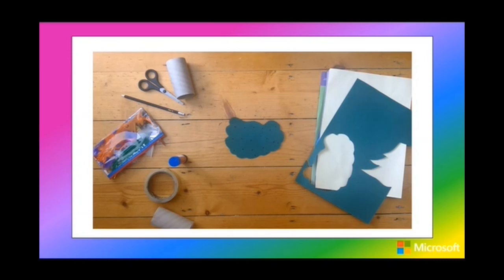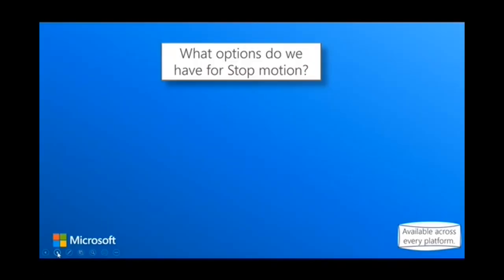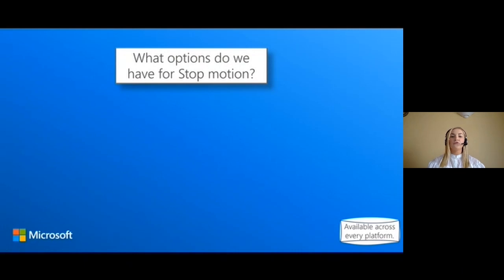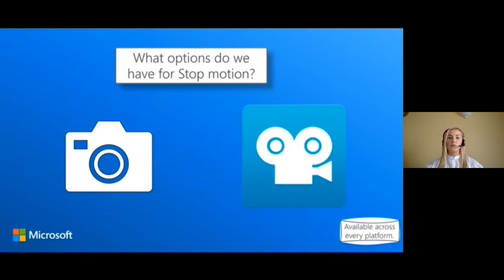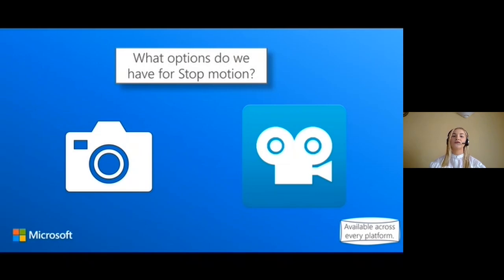Now that we have our characters made, we're going to get started on our stop motion. We have a couple of different options: you can use your camera to take pictures and then edit in a video editor, or you can use an app or website, take your pictures, upload them, and it will create the stop motion for you. Today Caelan will be using Stop Motion Studio, so she's going to take you more in depth on how to use it.